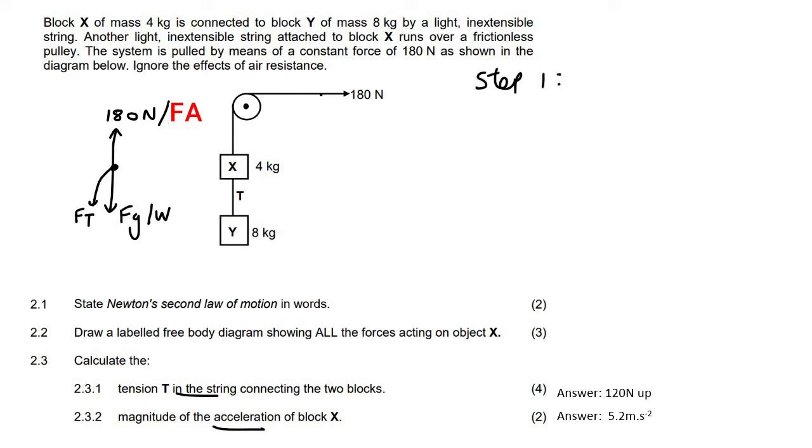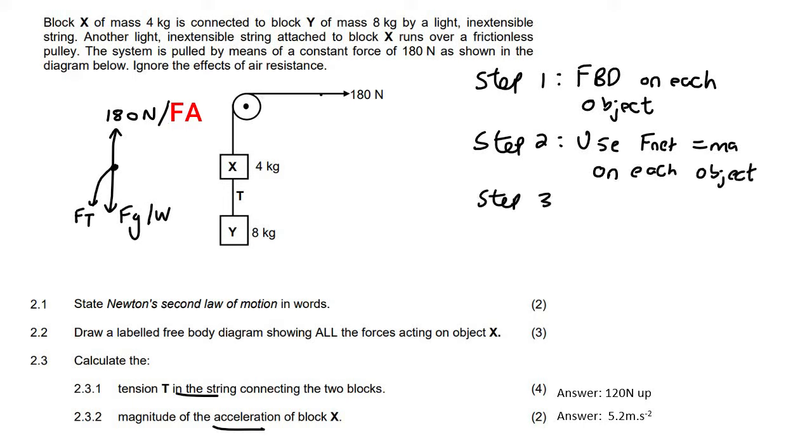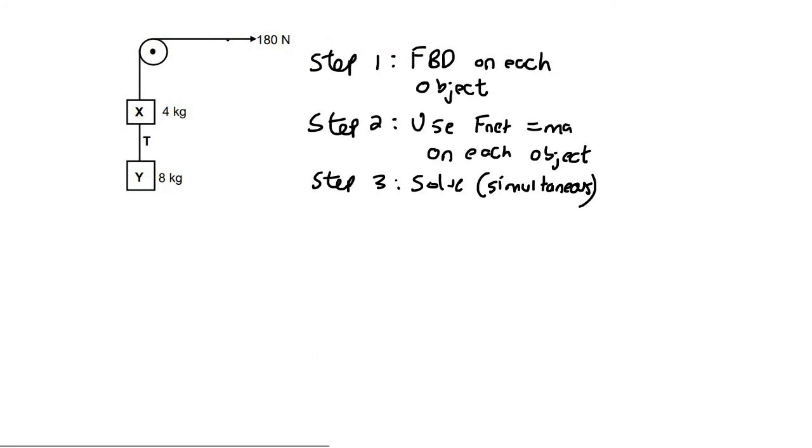Remember, whenever we have two objects connected with a rope, we can solve these types of questions using our three-step process. Step one, do a free body diagram on each object. Step two, use F net equals ma on each object. And then step three, solve. And most of the time, this would end up being simultaneous.